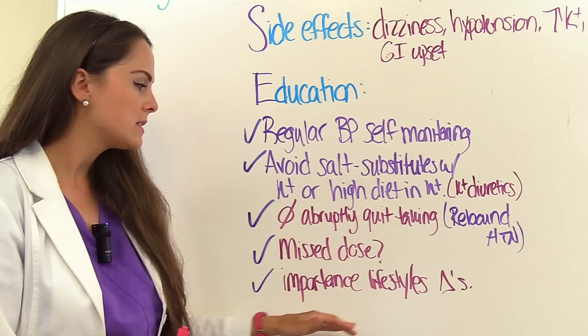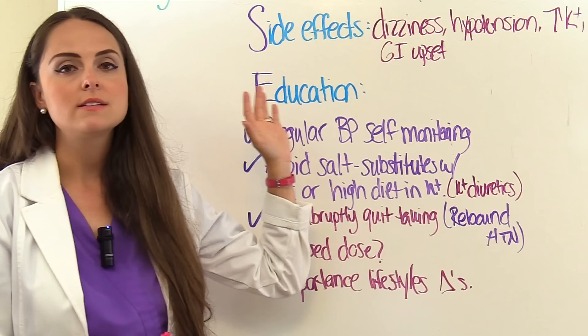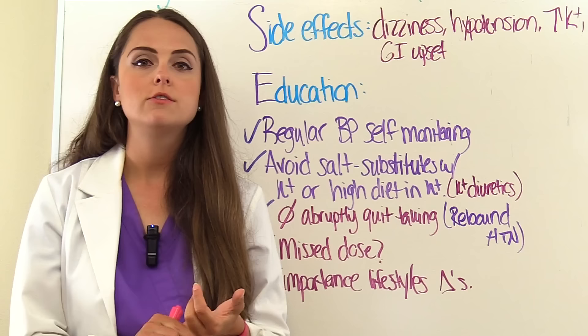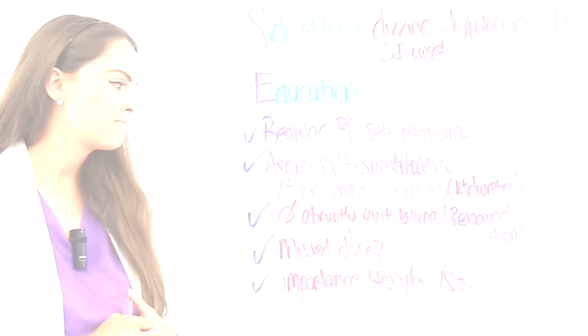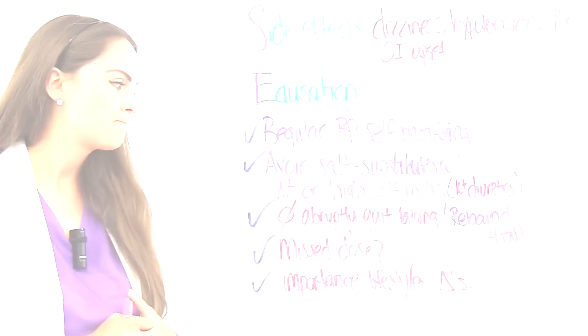Emphasize the importance of lifestyle changes. Anti-hypertensive medications do not cure hypertension — patients need to quit smoking if applicable, follow a healthy diet, and exercise. That wraps up this review of angiotensin 2 receptor blockers. Thank you so much for watching. Don't forget to take the free quiz and to subscribe to our channel for more videos.